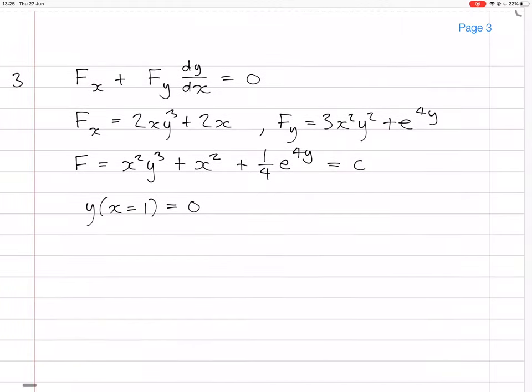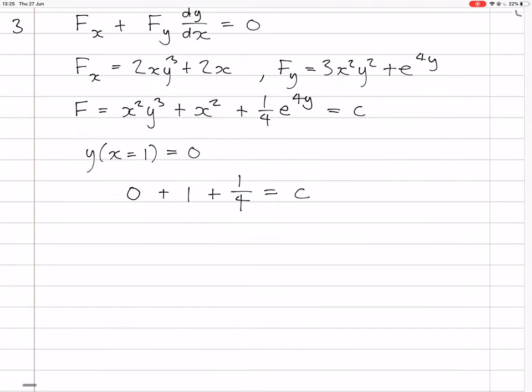So that means that this equation becomes... what? 0, the first one is 0 because of the y there. Plus 1. Plus 1/4 e^0, which is just 1, equals c. So that means that c equals 5/4, right?